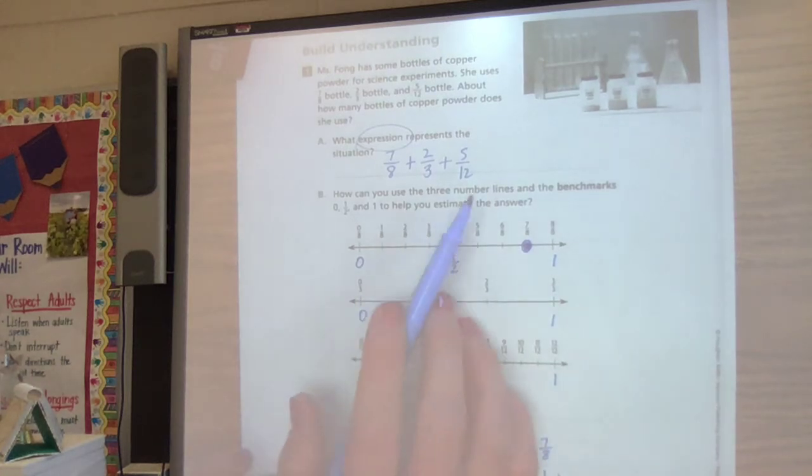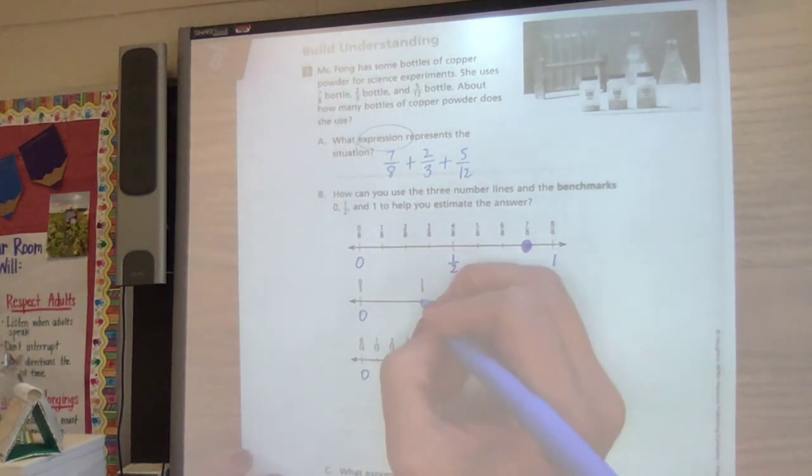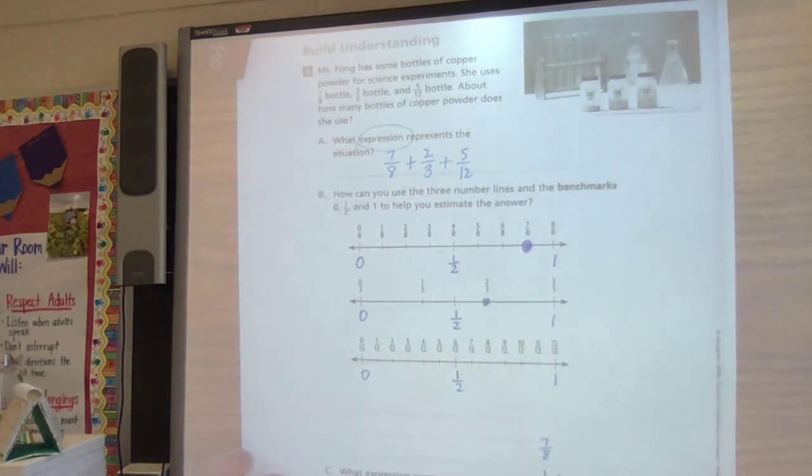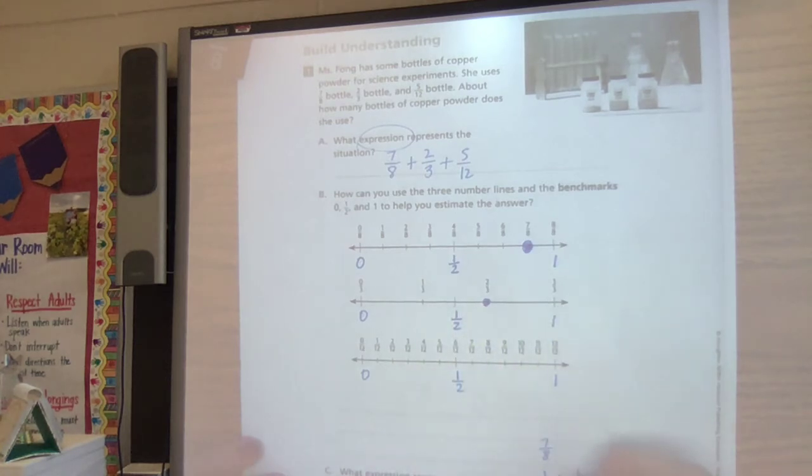All right. My next one was two thirds. Here's one third. Here's two thirds. All right. What do y'all think? Two thirds is close to what? I would say it's closer to a half than it is to a whole. So we're going to round that to a half. So that was our two thirds.